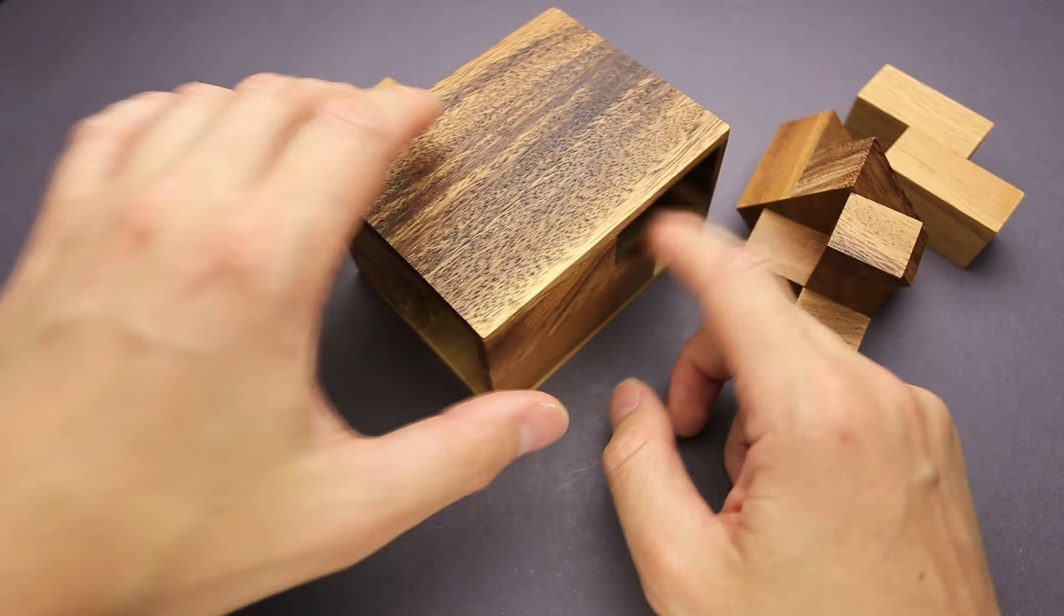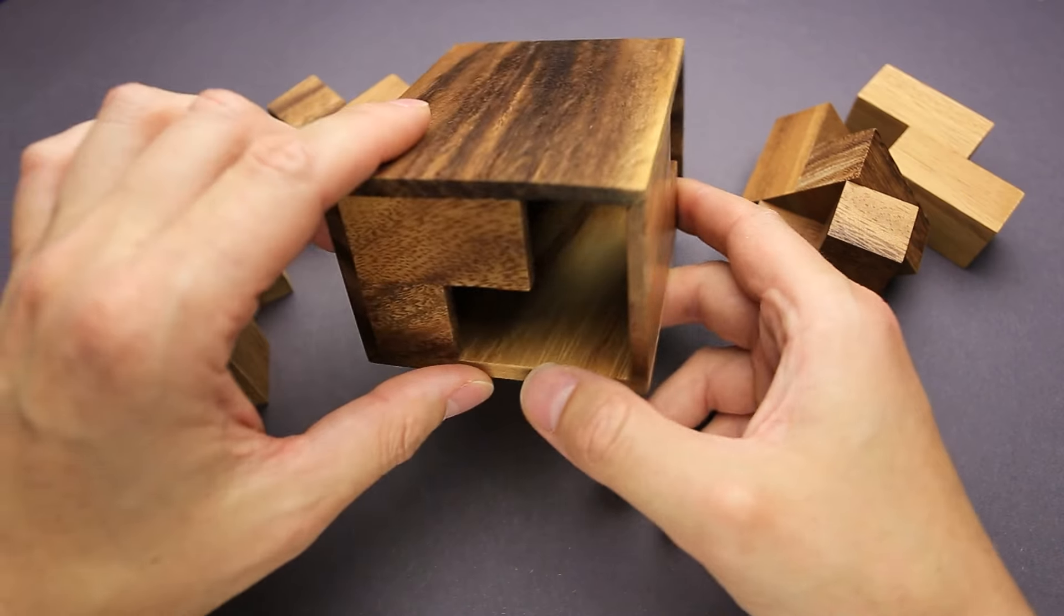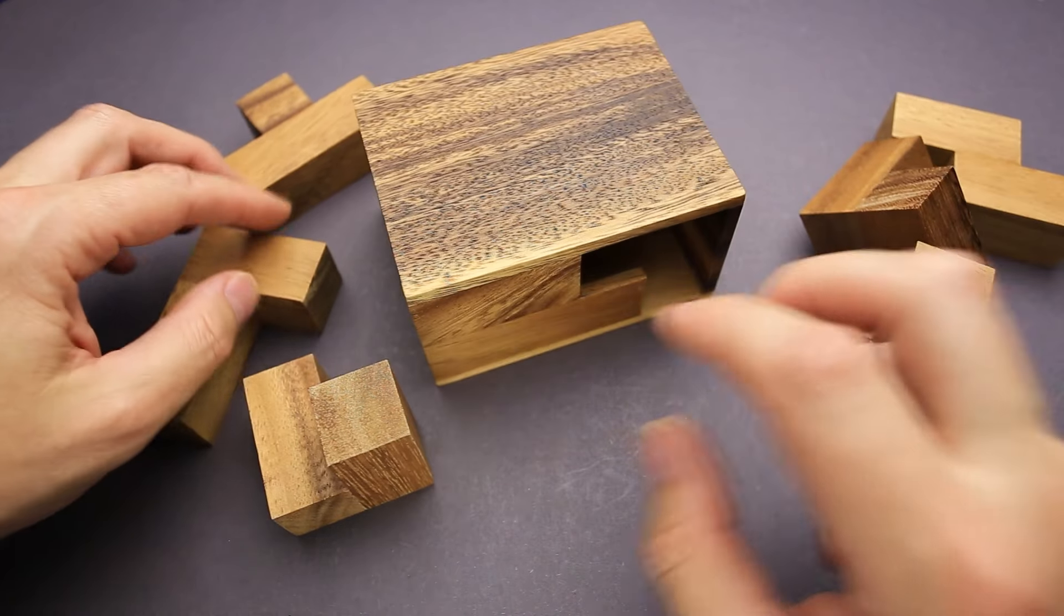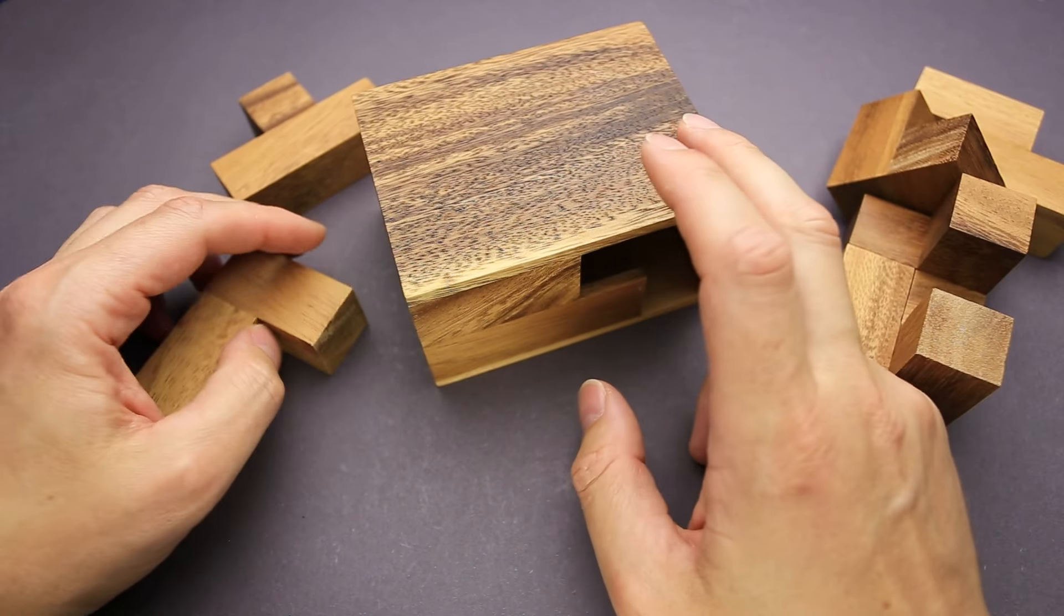So how to solve the puzzle? As you can see, there is a frame. It has two openings. There are six uniquely shaped parts and you have to find a way how to fit all of them inside the frame.